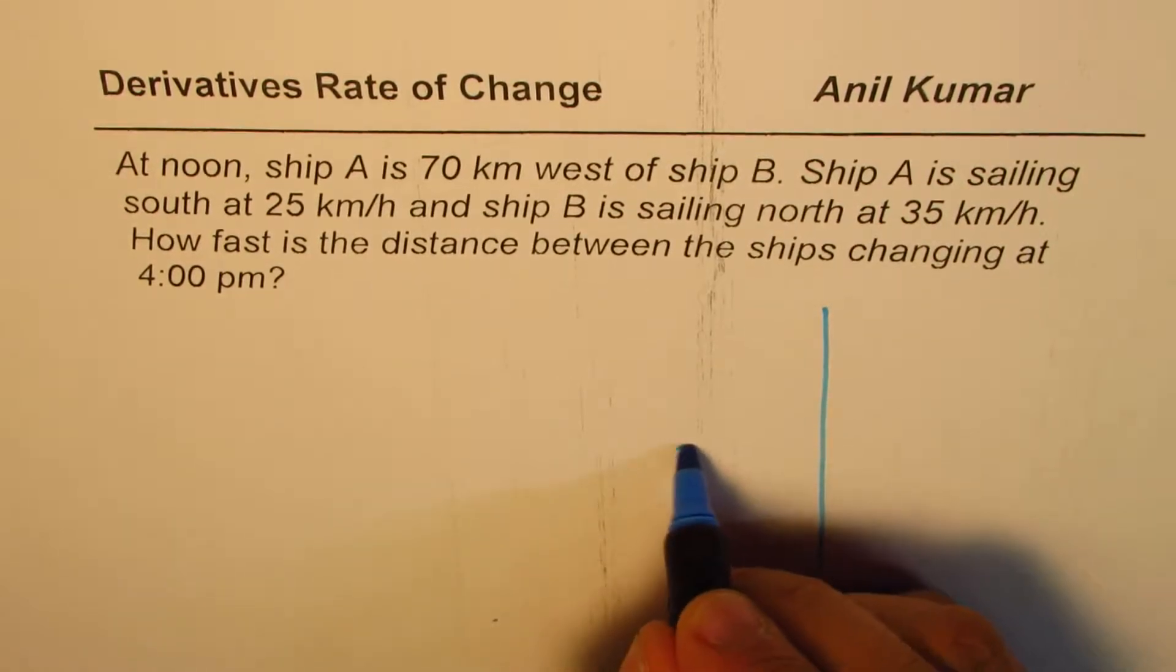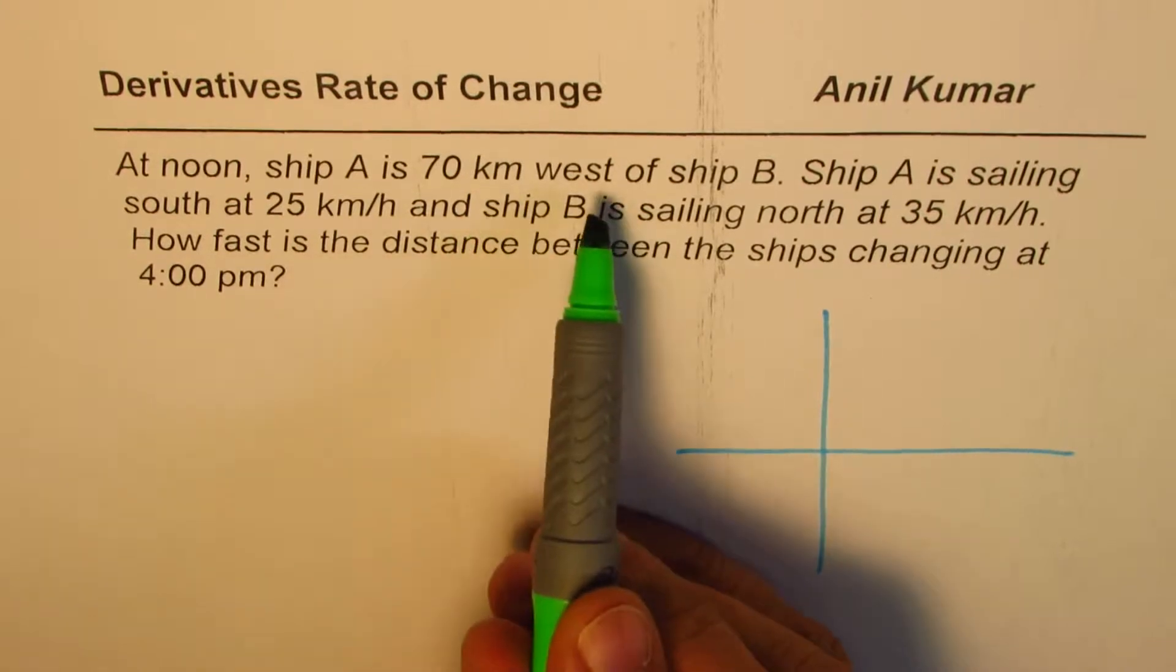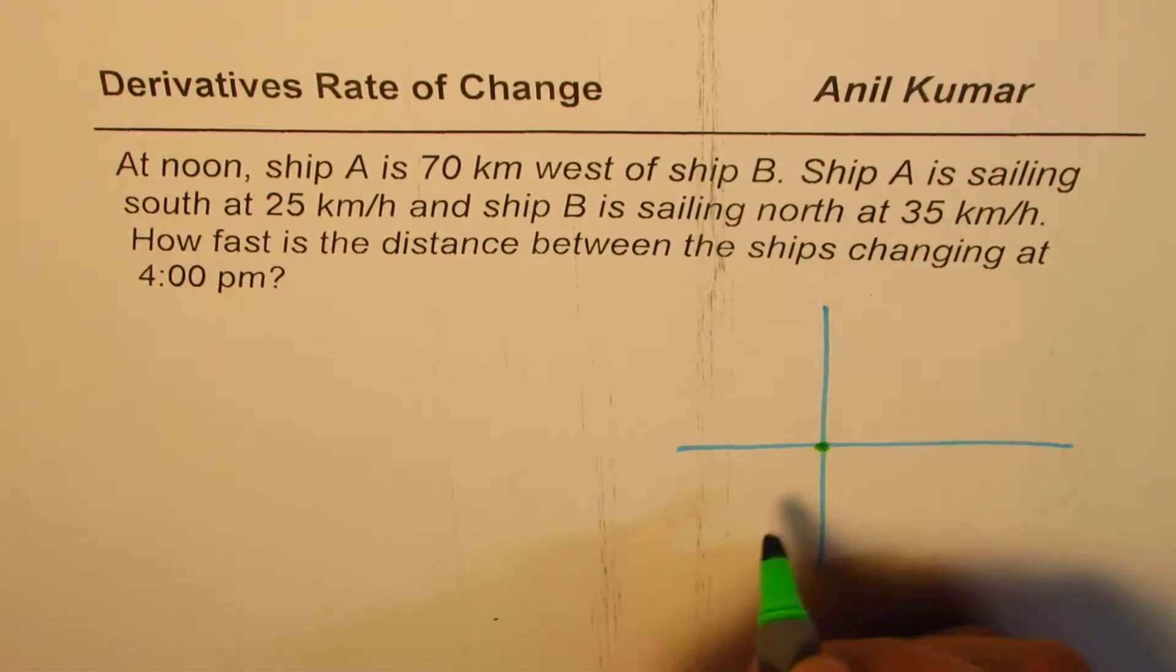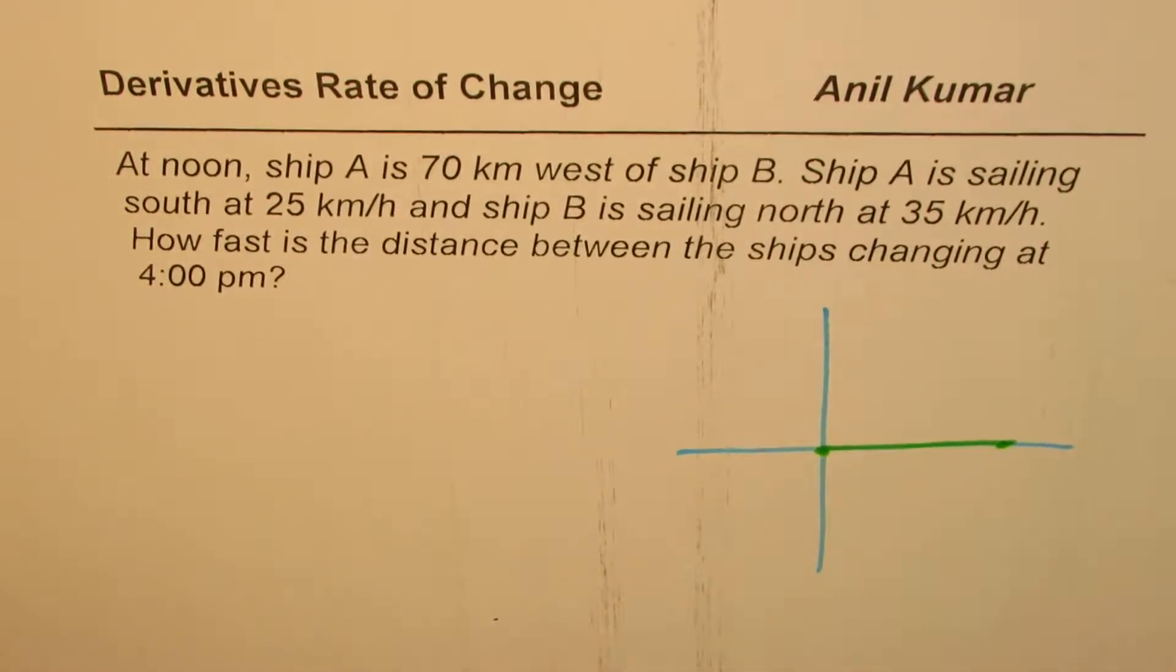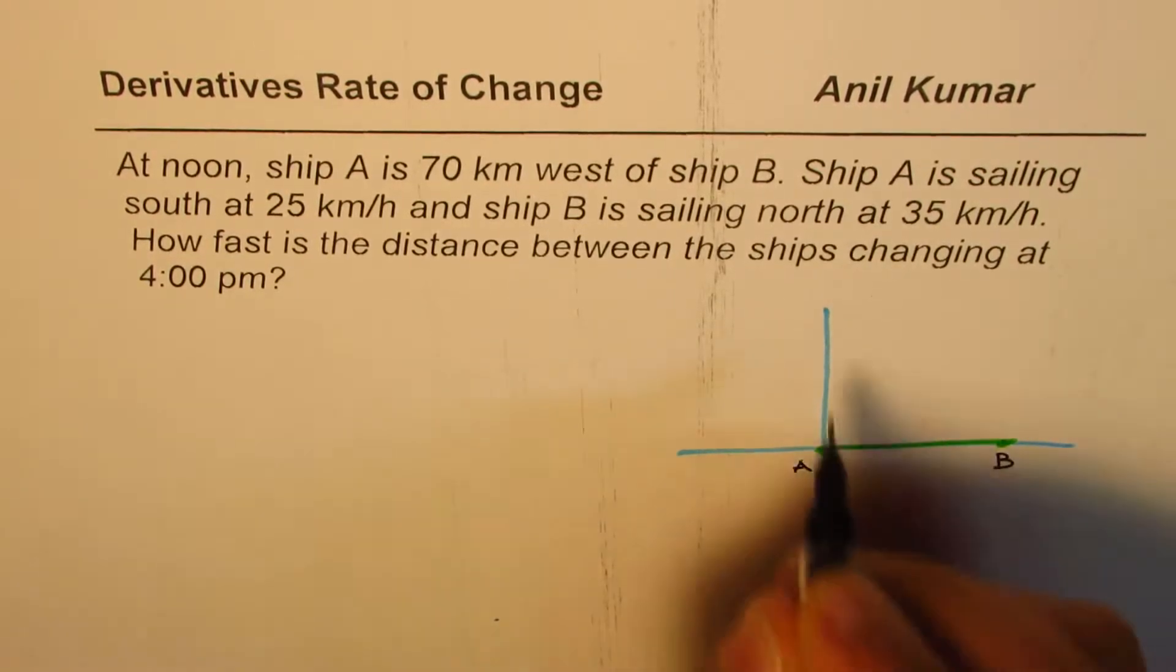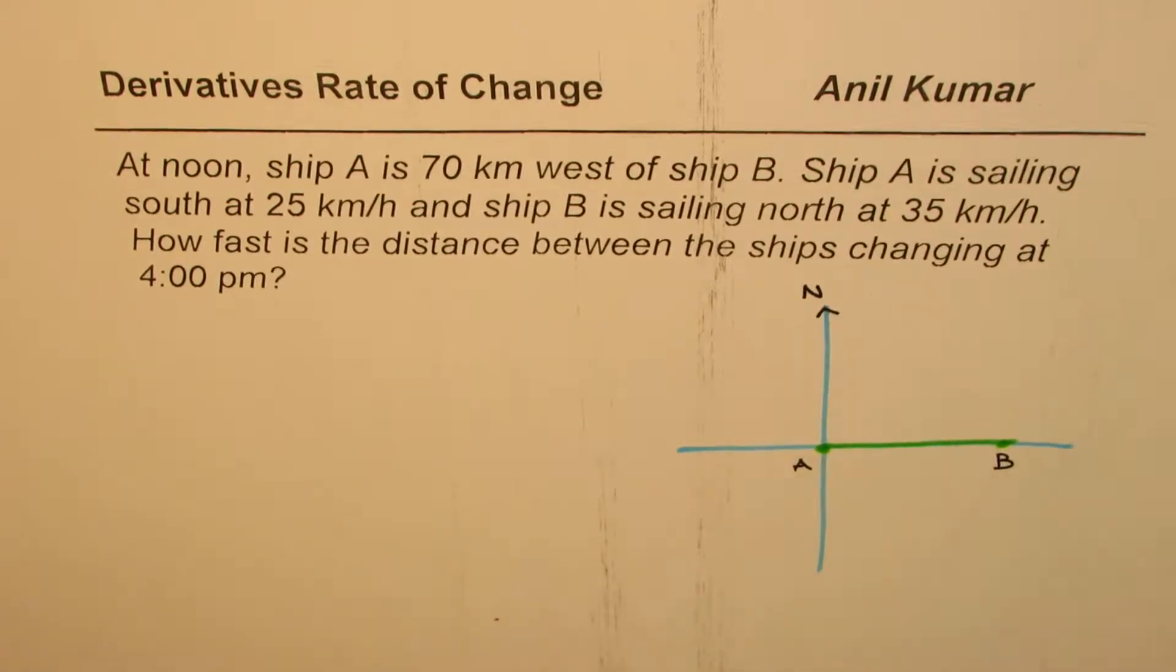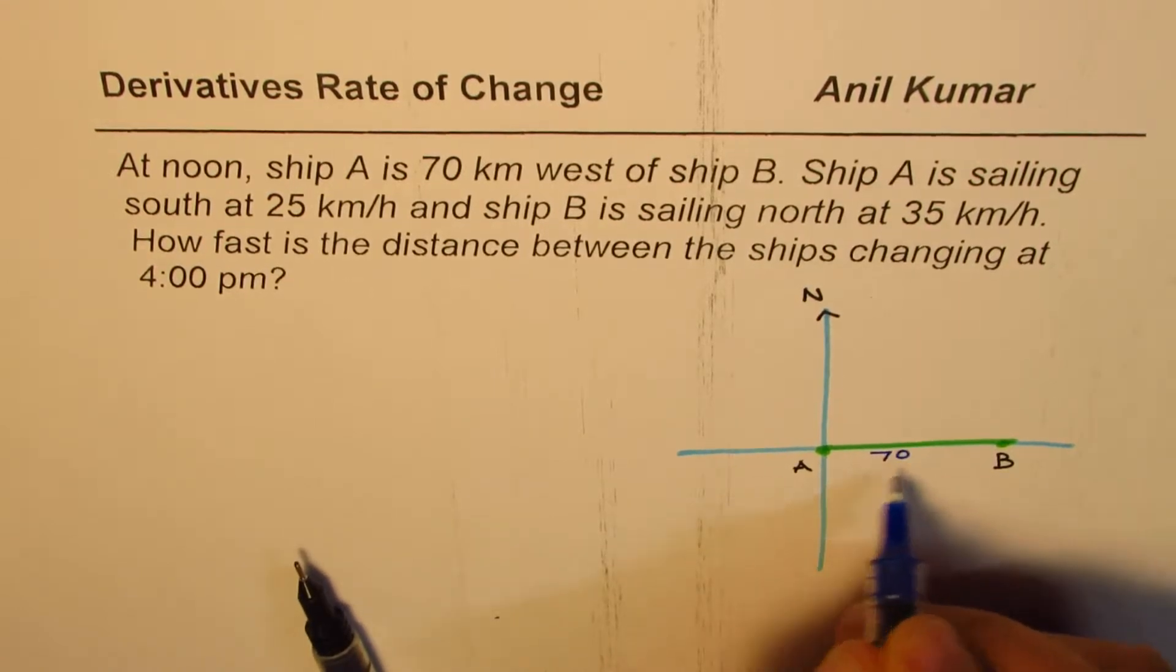How fast is the distance between the ships changing at 4 p.m.? So let's sketch and then figure it out. Let's say this is giving north and south direction. What we have here is ship A which is 70 km west of ship B. So let me take this as A and this is B. This distance between A and B is 70 km. That direction is north, and this distance in the center is 70 kilometers.